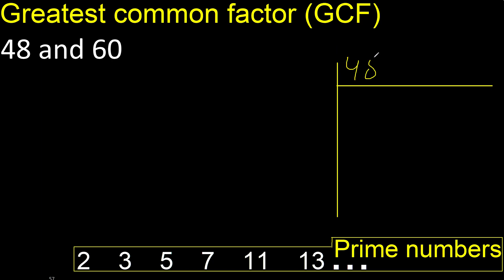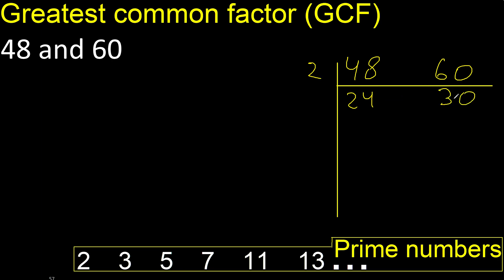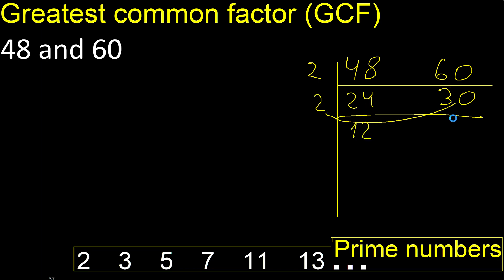Can 48 and 60 be divided by 2? Yes, therefore divide. 48 divided by 2 is 24, and 60 divided by 2 is 30. Can be divided by 2 again: 24 divided by 2 is 12, and 30 divided by 2 is 15.